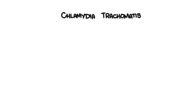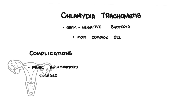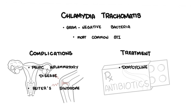In summary, chlamydia is caused by Chlamydia trachomatis, a gram-negative bacteria and the most common cause of sexually transmitted infection. There are many complications associated with chlamydia, including pelvic inflammatory disease and Reiter's syndrome. Treatment is with doxycycline and azithromycin.